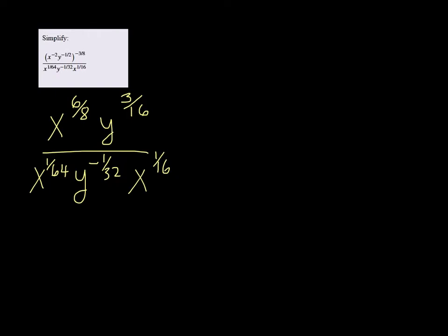In the denominator, I can combine those two x's by multiplying the bases and adding the exponents. So in a calculator, I would do 1 divided by 64 plus 1 divided by 16.